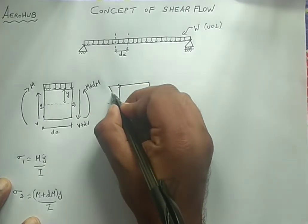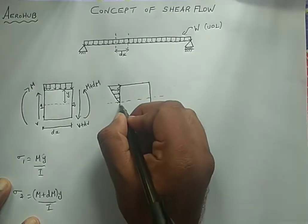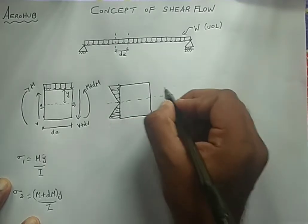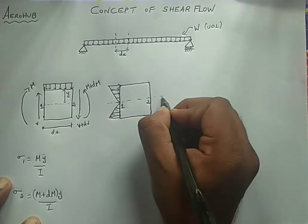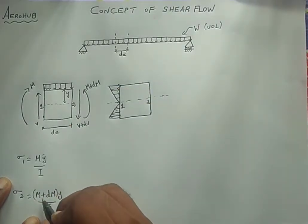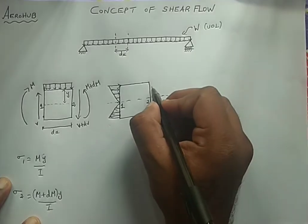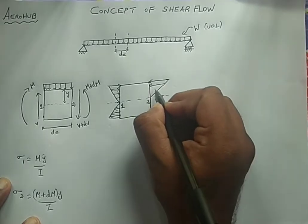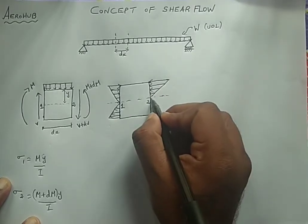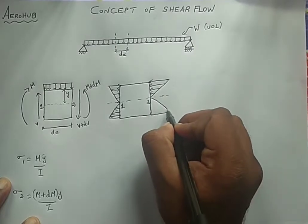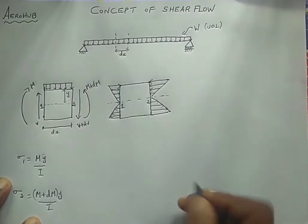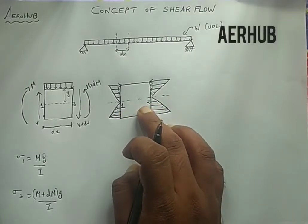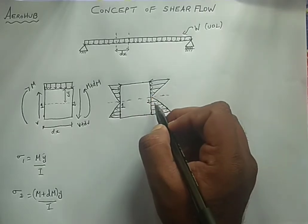The variation of normal stress decreases to zero at the neutral axis and increases toward the edges. For section one and section two, section two has more stress because it has M plus dM — a larger moment — so the triangle representing stress variation is bigger on that side. The variation of normal stress differs between section one and section two simply because there is a larger moment at section two compared to section one.